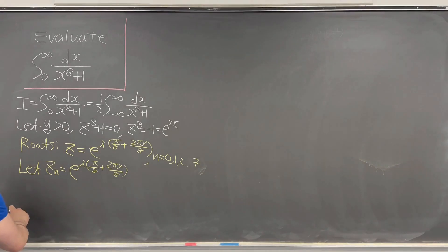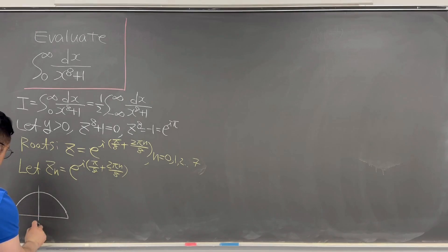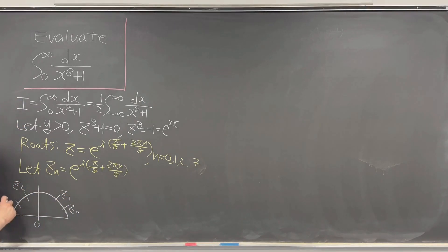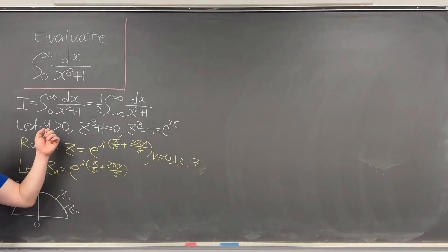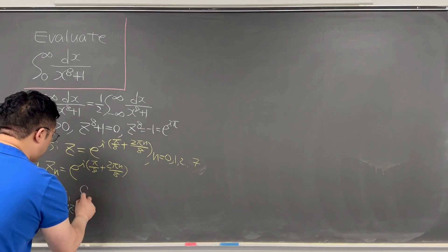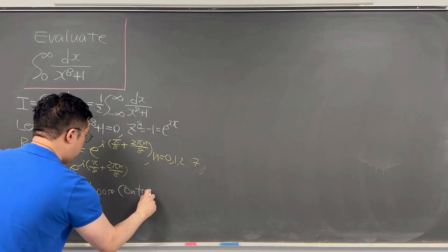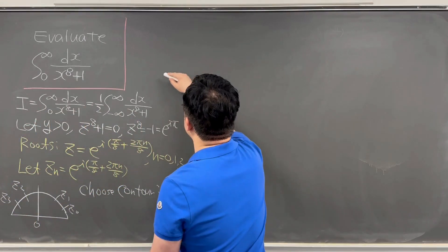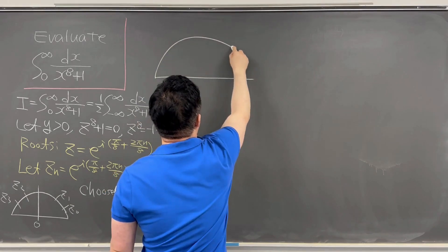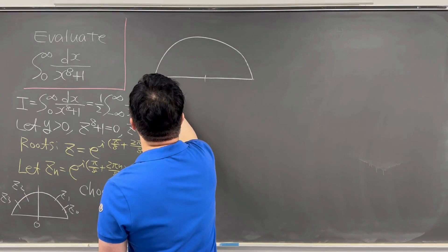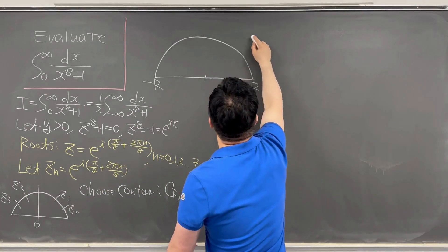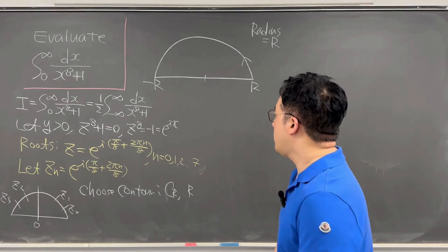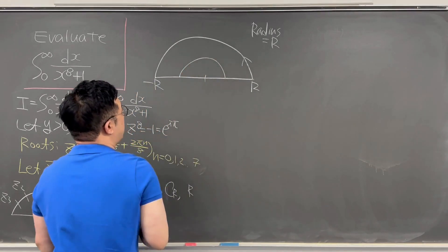Now we can draw the semicircle. We have z0 and z1, then z2 and z3, since y is greater than 0. We choose the contour C_R with radius R. We draw the larger semicircle with endpoints at negative R and R going in this direction, with the smaller semicircle inscribed within it.